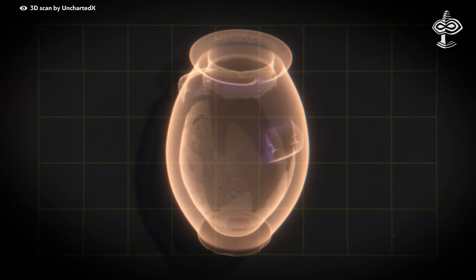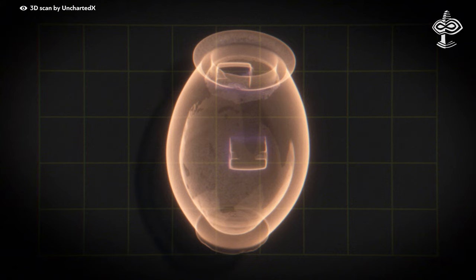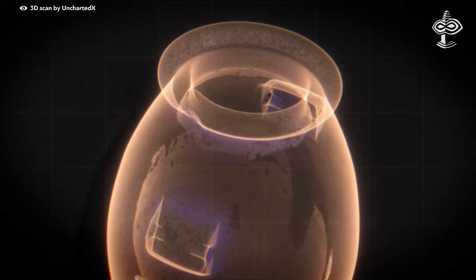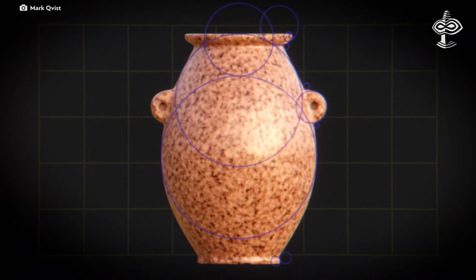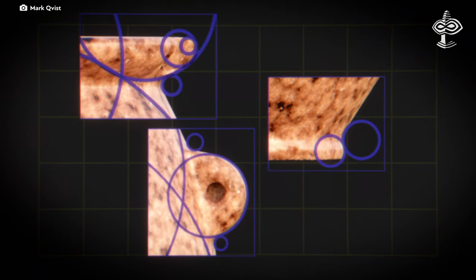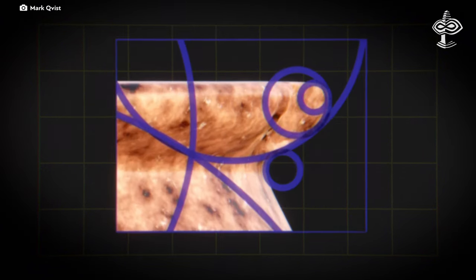To ascertain the vase's design principles, they measured its features and looked for patterns, consistent measurements, and significant ratios. Their findings revealed numerous regular patterns indicative of precise mathematical formulas.